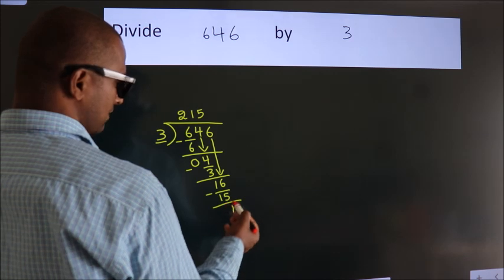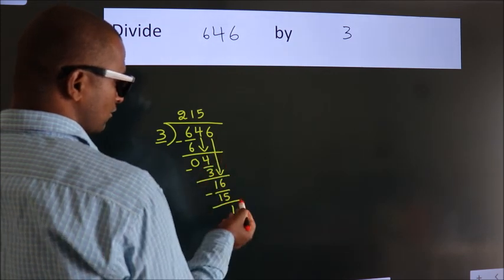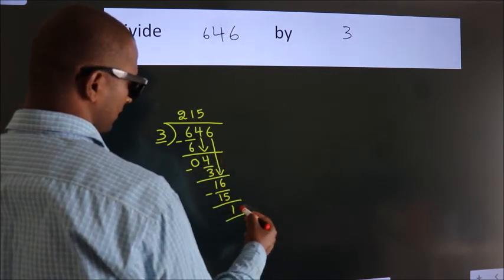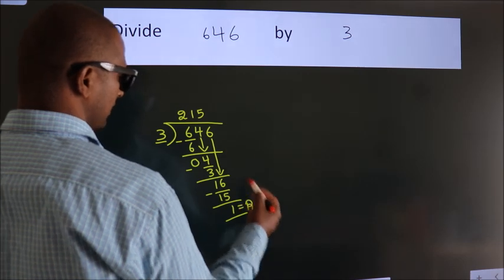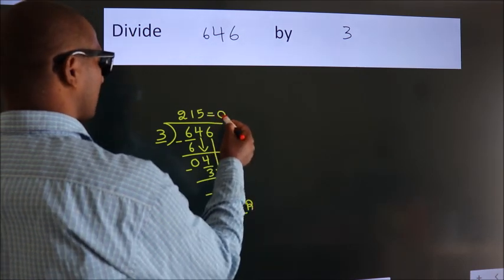After this, no more numbers to bring it down. So we stop here. This is our remainder. This is our quotient.